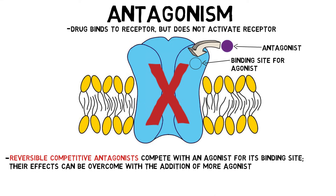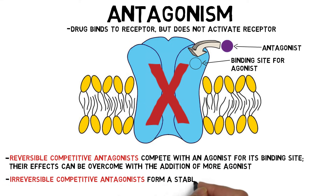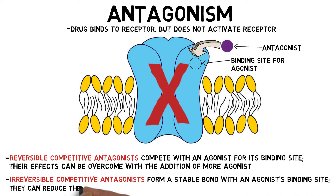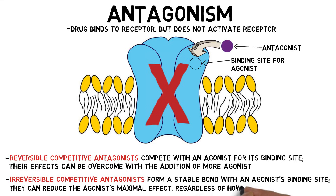Irreversible competitive antagonists, sometimes called noncompetitive antagonists, also bind to the site where an agonist binds, but unbind from the receptor very slowly, if at all. They can reduce the maximal effect an agonist has, regardless of how much agonist is present.